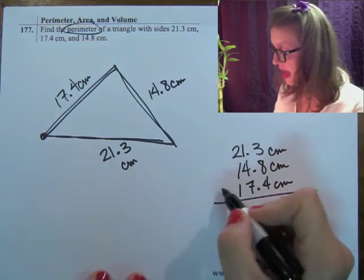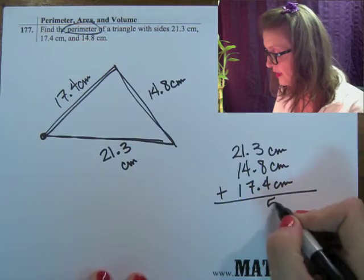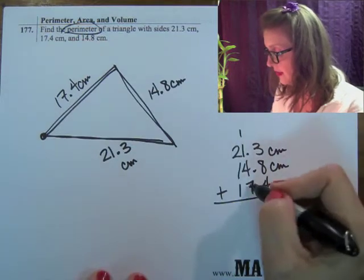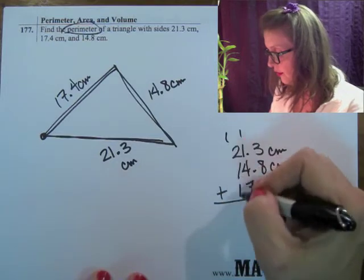I add those up and that tells me how far I went. So 8, 12, 15, carry the 1, 7, 8, 9, 10, 11, 12, 13, 2, 3, 4, 5.